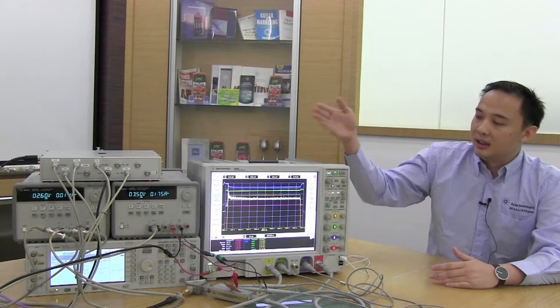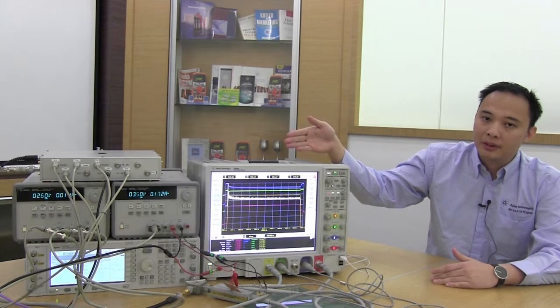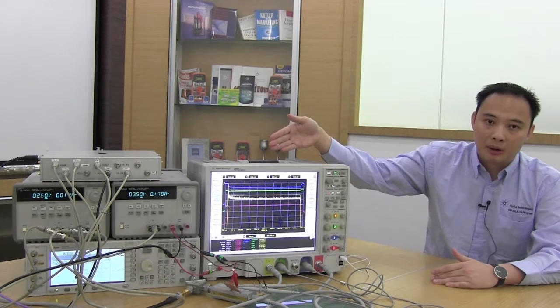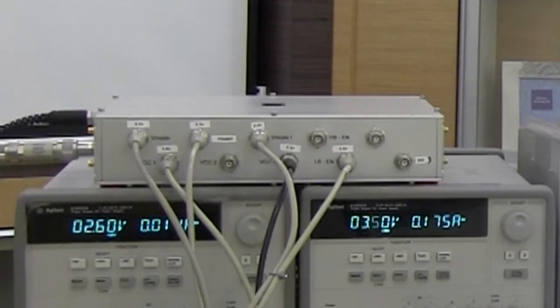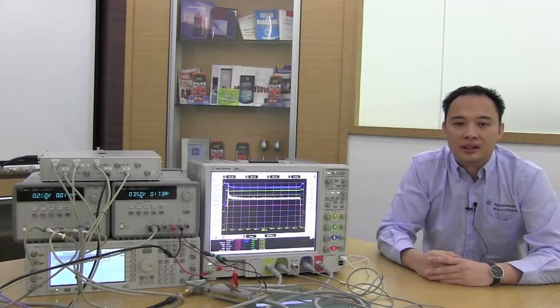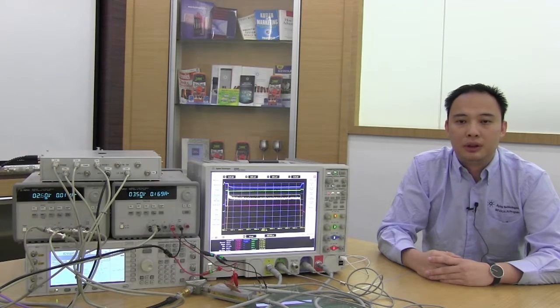This is the setup that was illustrated in the earlier diagram with the 8990B peak power analyzer and the power amplifier. The RF source and DC power are already connected and switched on.